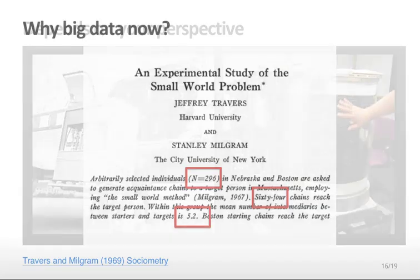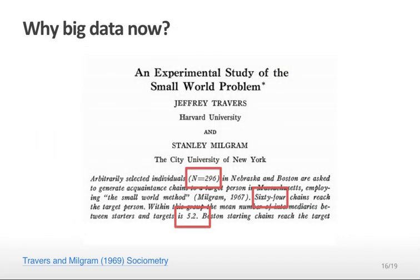So why are we talking about big data now, if it's always been a matter of perspective? Here's an example. This is a study that was performed in 1969, where 296 random individuals in Nebraska and Boston were asked to take a letter and mail it to a friend, who would mail it to a friend, who would mail it to a friend, with the eventual goal of ending up at one target individual in Boston, Massachusetts. They collected 64 such mail chains, and they calculated that the average number of people in between the original person that the letter started with and the target person was 5.2. This number got rounded up and became the usual term 6 degrees of separation that you may have heard about before.